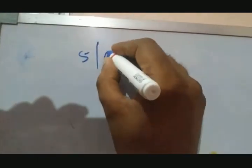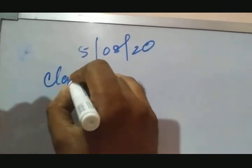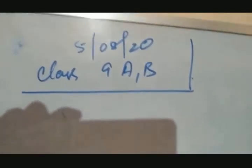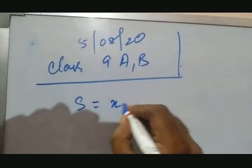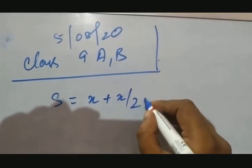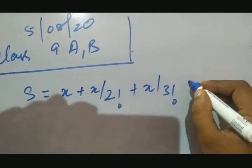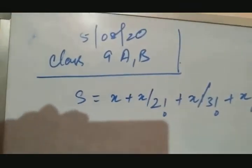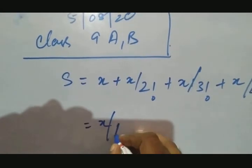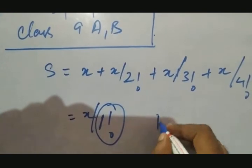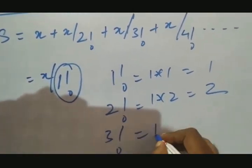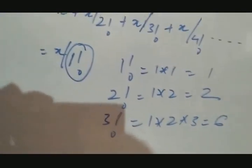So this is 5th August 2020 and this is for the class 9th A and B. So we move on with it. So S equals to x plus x upon 2 factorial plus x upon 3 factorial plus x upon 4 factorial dot dot dot n terms. Now this is x means simple x means here x upon 1 factorial. So this is 1 factorial. Now what is 1 factorial? 1 into 1 equals 1. 2 factorial, it is 1 into 2. 3 factorial, so it is 1 into 2 into 3 equals 6. How are you getting it? This is what the factorial says. So how we are going to compose this program.